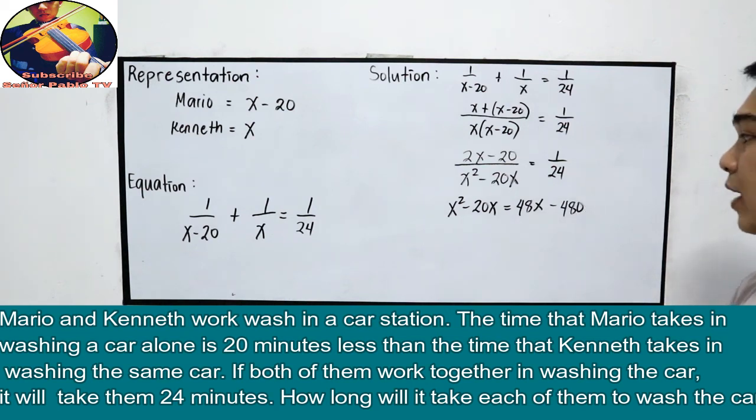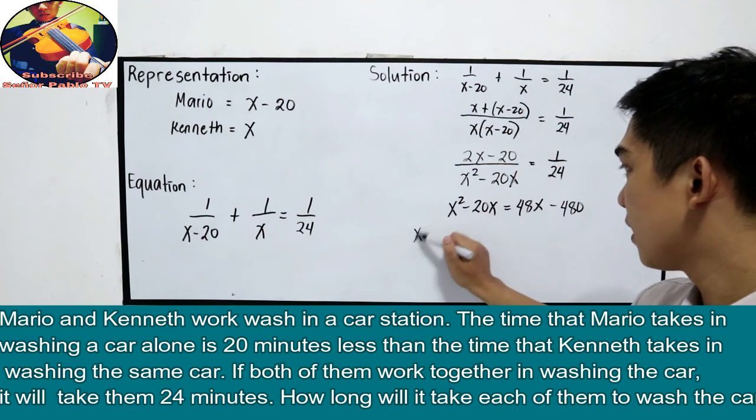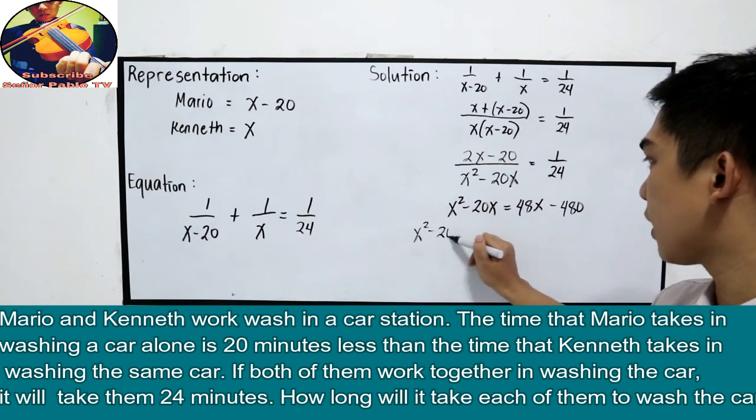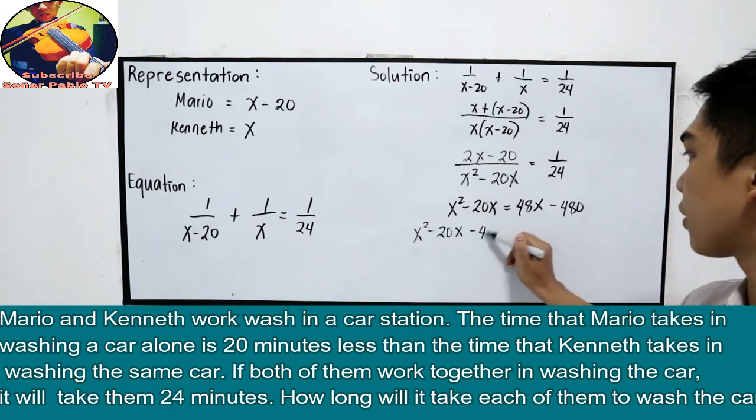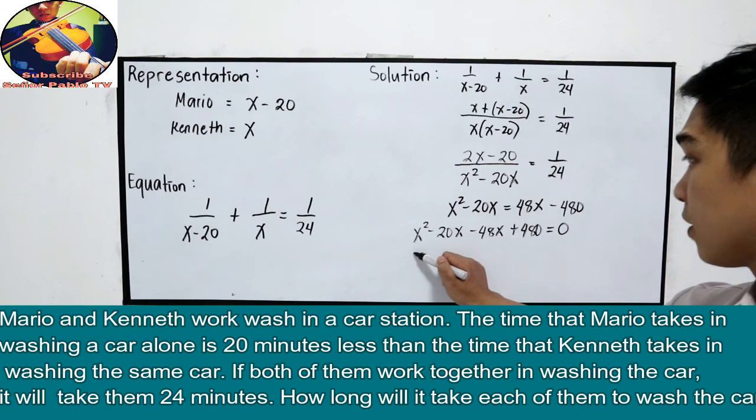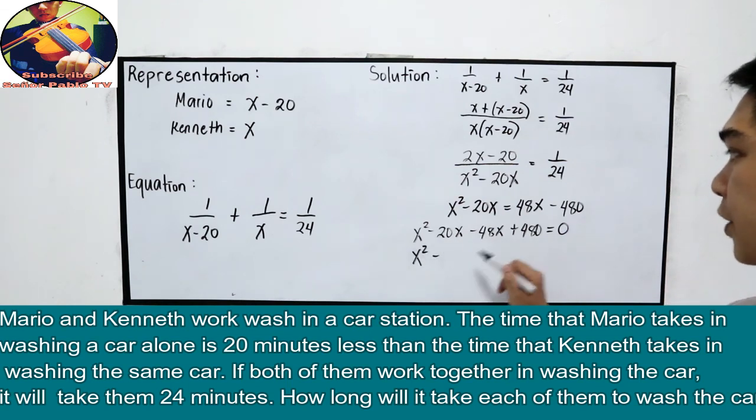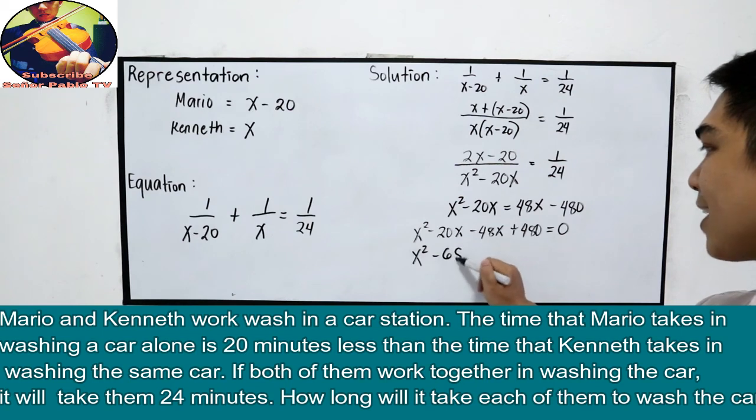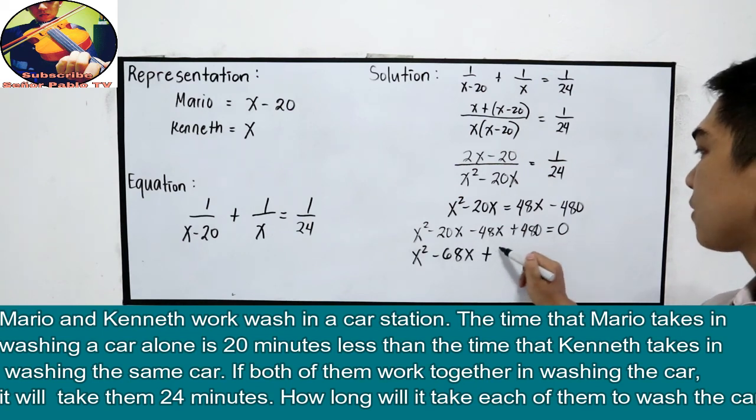Now, let us equate to 0. Transpose. So, x squared minus 20x minus 48x plus 480 is equal to 0. Combine like terms. So, x squared minus 20 minus 48, 68x plus 480 is equal to 0.